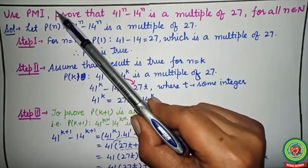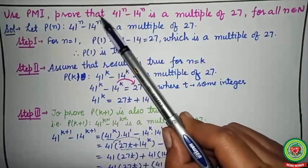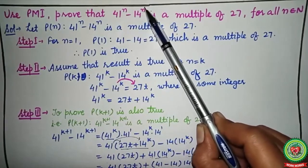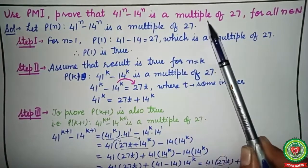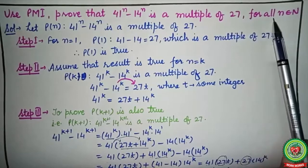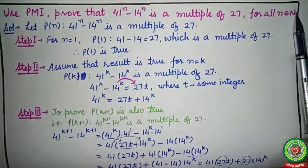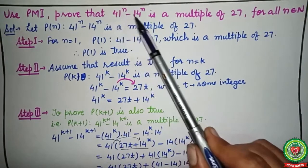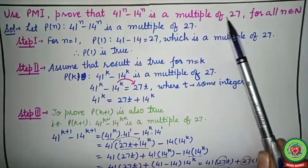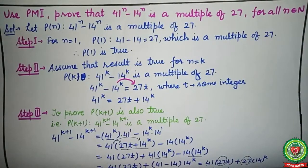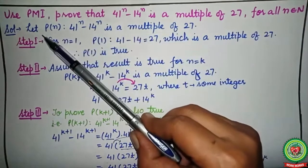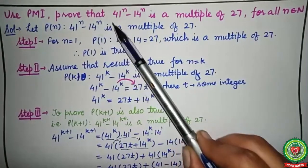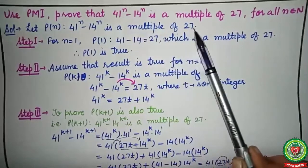Using the Principle of Mathematical Induction, prove that 41^n − 14^n is a multiple of 27 for all n belonging to N (natural numbers). We have to show that a number of this form is always a multiple of 27. Consider the statement as P(n): 41^n − 14^n is a multiple of 27.